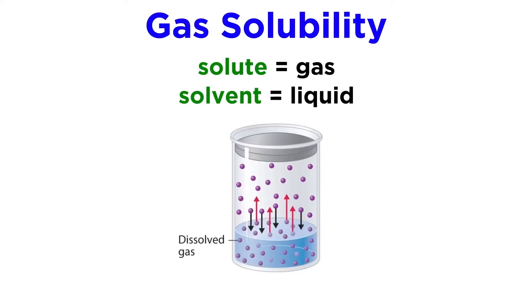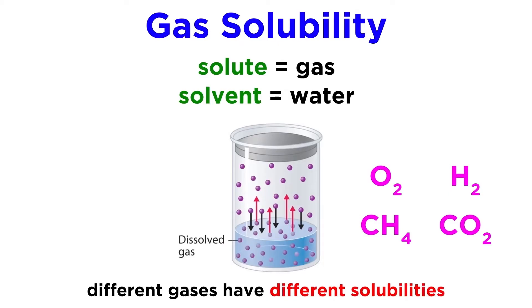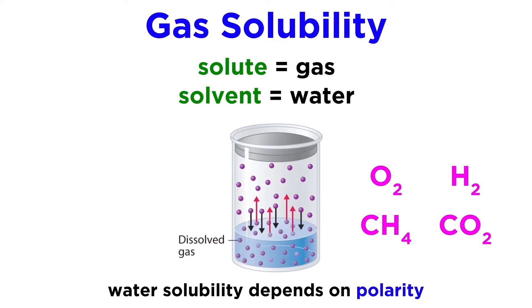We should also talk about the solubility of gases in liquid solvent. Different gases, like oxygen, hydrogen, methane, or carbon dioxide, will have greatly varying solubilities in water, and these solubilities depend on the ability of the different gas particles to make electrostatic interactions with water molecules in solution, just like the way ionic solids dissociate in aqueous solution to make ion-dipole interactions.